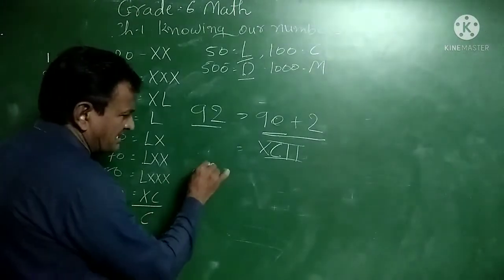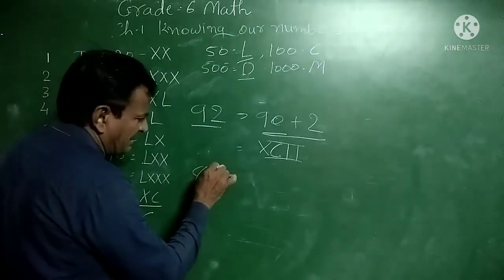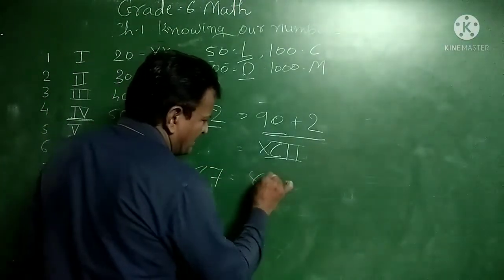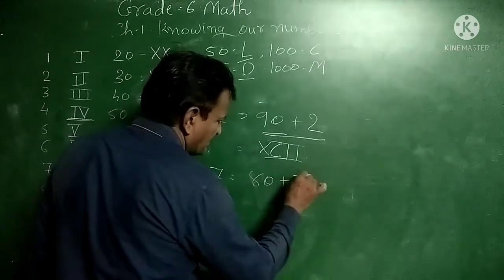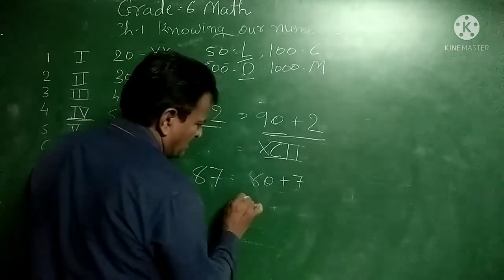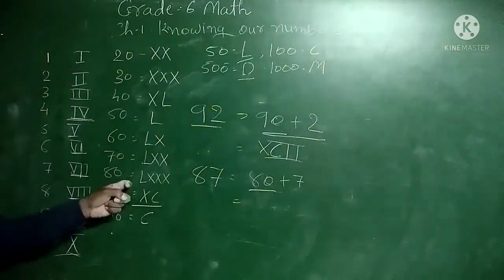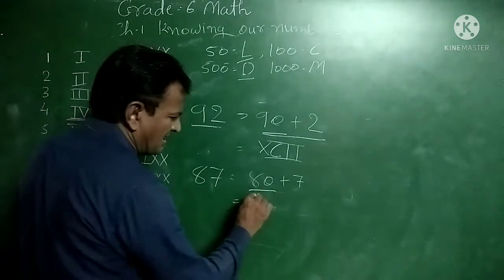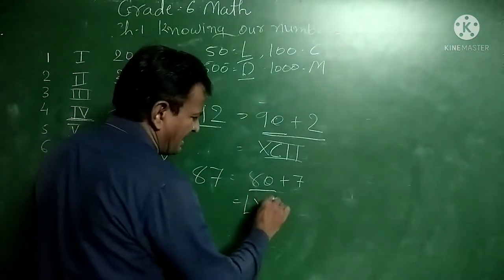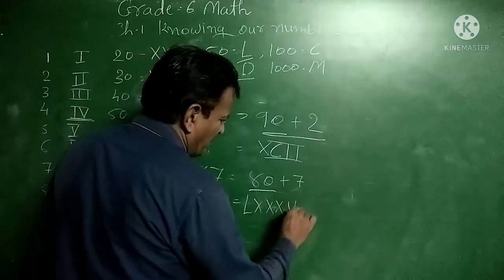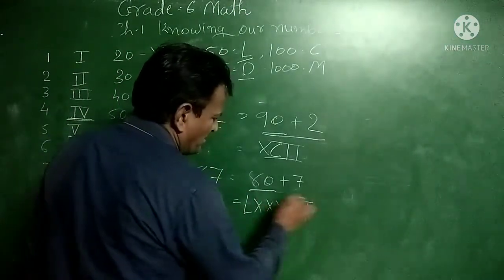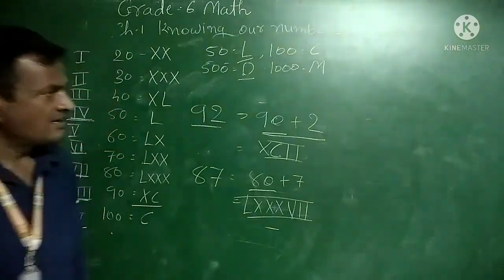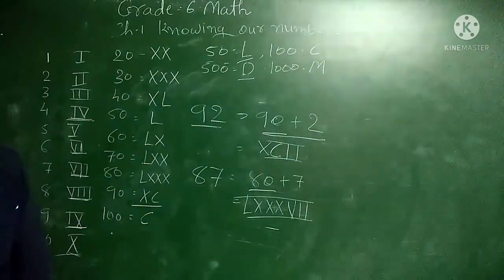For 87: we write it as 80 plus 7. The symbol for 80 is LXXX (L plus three X's). For 7 we write VII. So 87 in Roman numerals is LXXXVII.